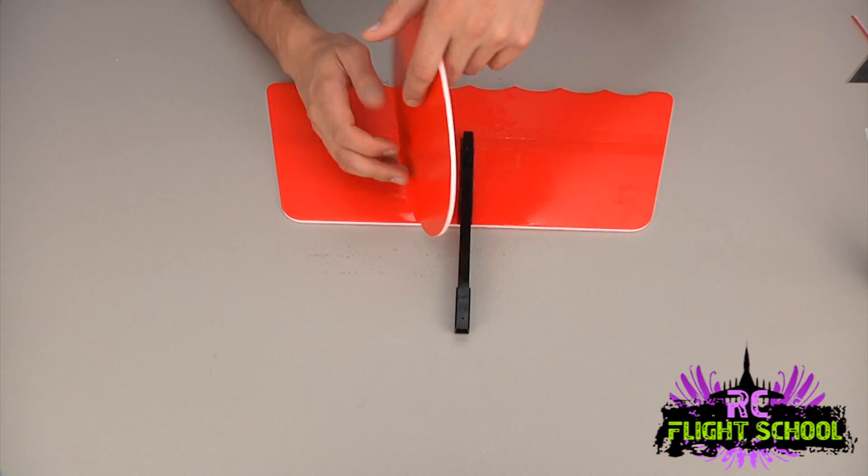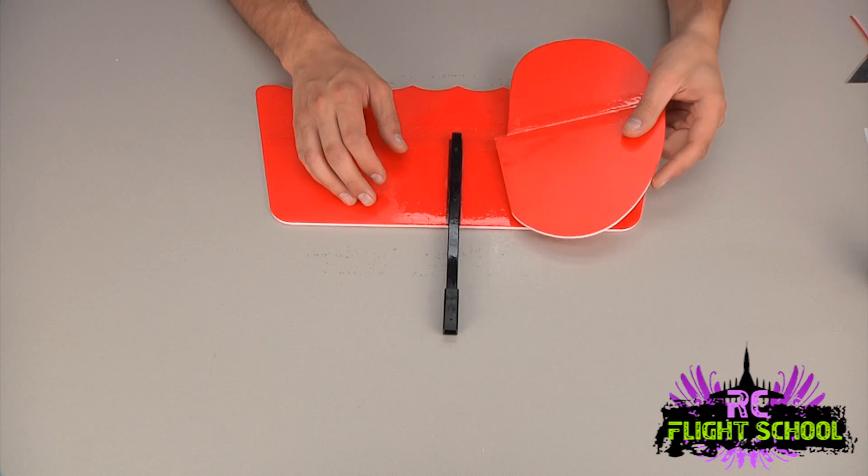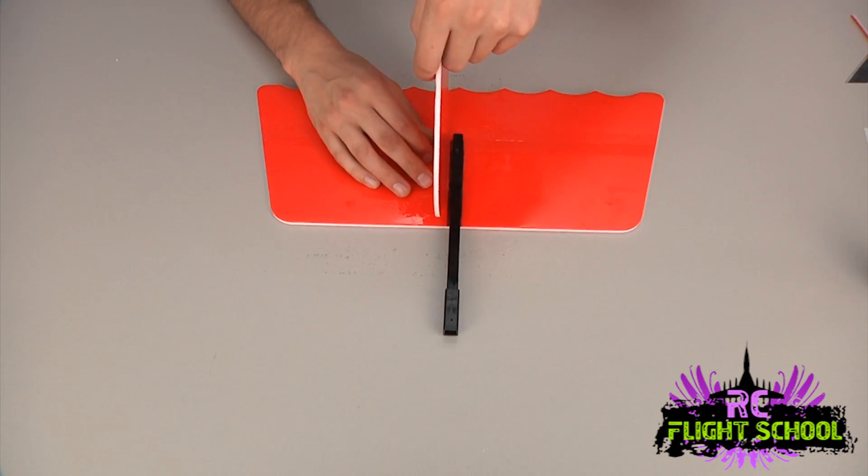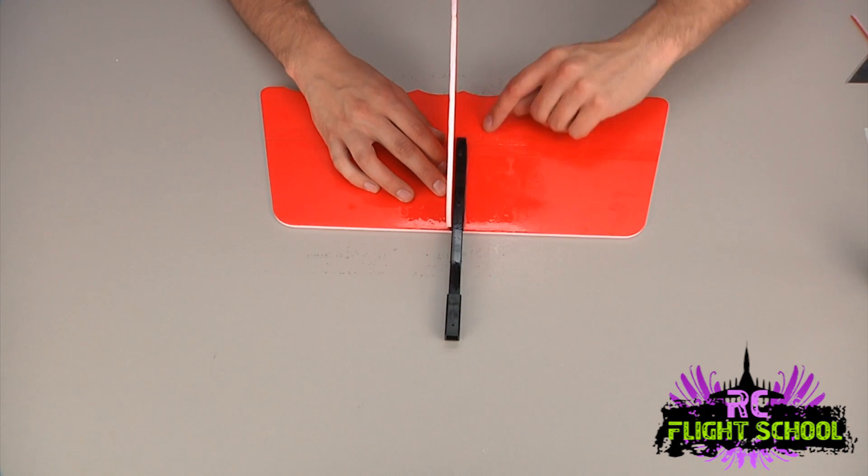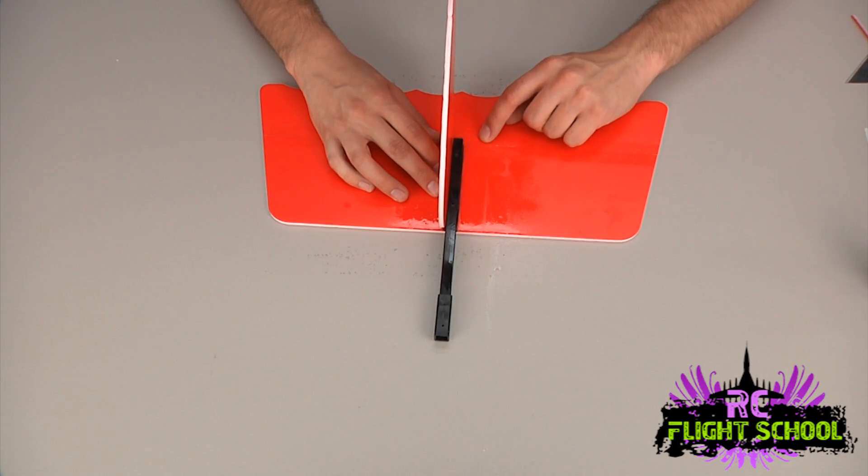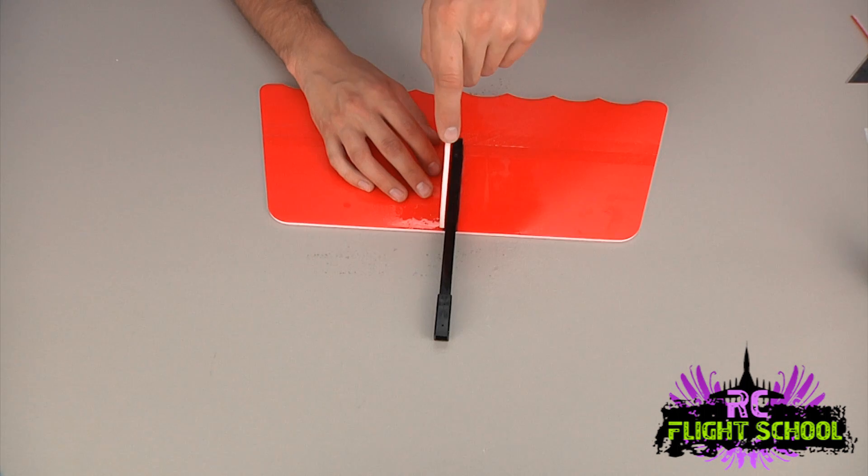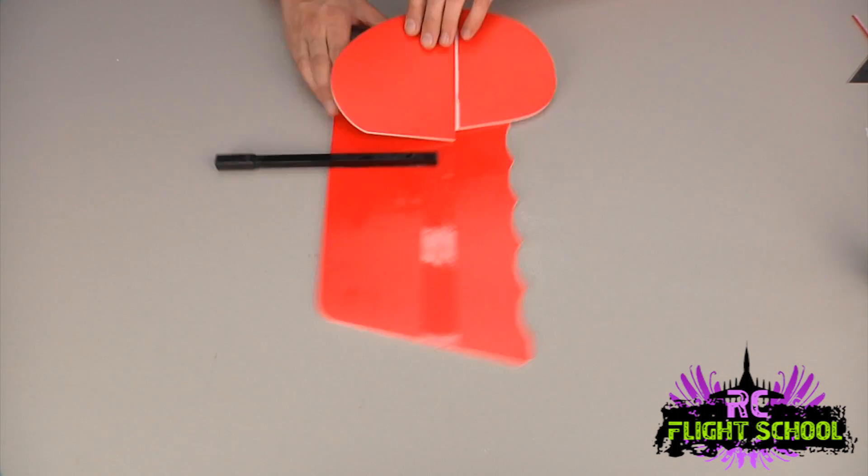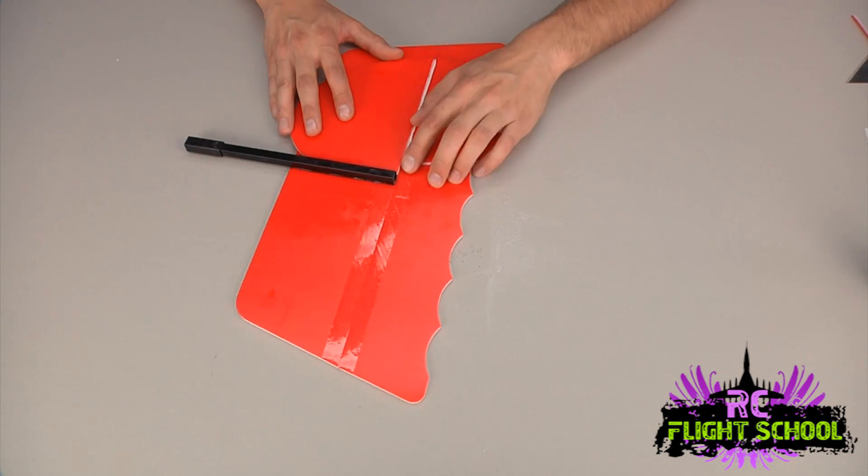Now it's time for the vertical stab. Now you do want to pay attention to which side you're putting this on. I'm putting it on this side because I know that my elevator push rod has to run along here. There's a little cut out for it, there's a little slot. So I'm going to put the rudder on this side of things. And we're going to line the rudder to the very end of the stick like so.